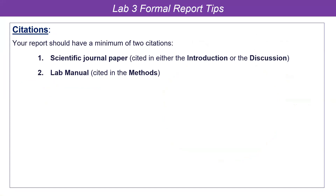I'm looking for a minimum of two citations. One citation should be your scientific paper — for most people, it's going to be the same paper you picked for the lab three pre-lab. If you want to use a different paper, that's fine, as long as you do the method correctly. The citation should be in either your introduction or discussion section, or both.